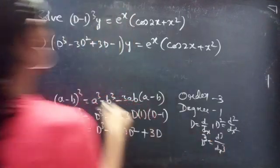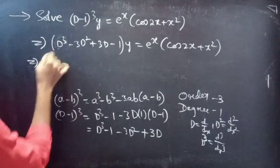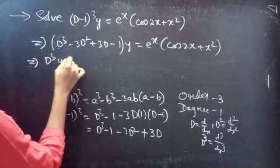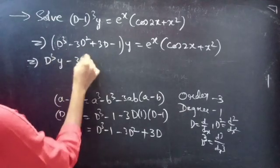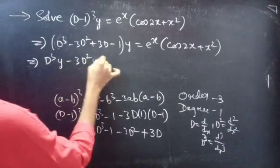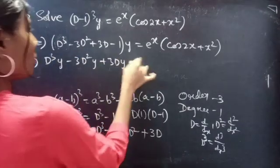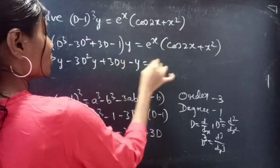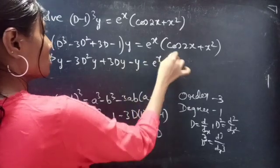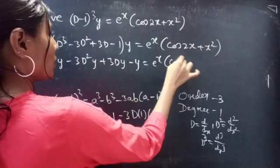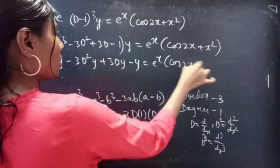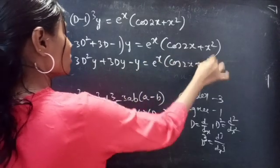Now let's write our equation as: D cube y minus 3D square y plus 3Dy minus y equals to e power x into cos 2x plus x square.